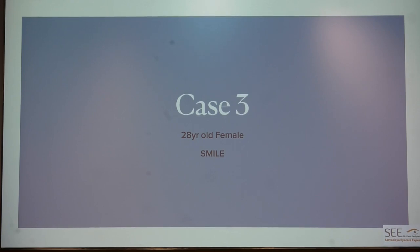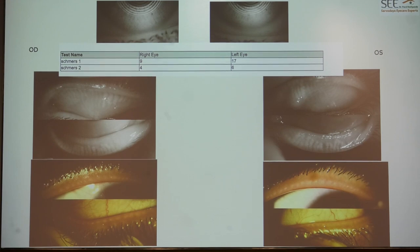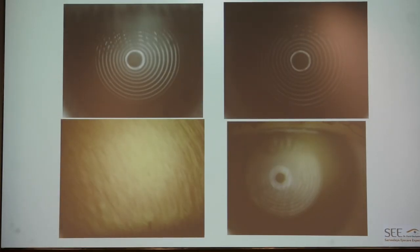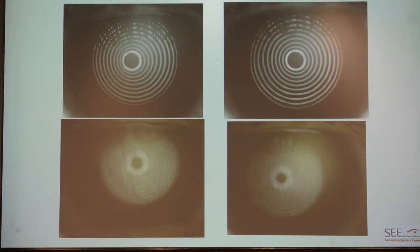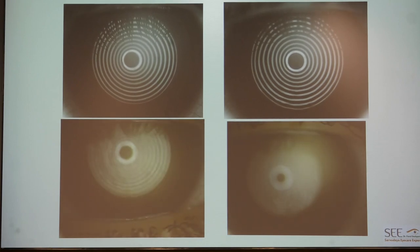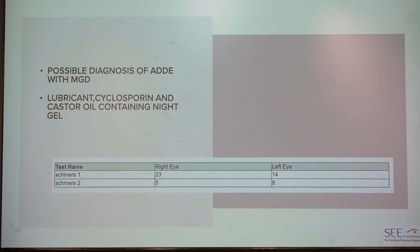Case 3: a patient who had undergone SMILE six months back with persistent discomfort on computer use. Tear evaluation showed low Schirmer's 2 values and significant meibomian gland atrophy on meibography with pouting of gland openings and viscous lipids. NIBUT was relatively okay, left eye slightly decreased. Tear film lipids showed a continuous grey film suggesting normal or slightly low lipid layer. The patient was diagnosed with a combination of aqueous-deficient dry eye and MGD — a refractive surgery-induced dry eye with a neurotrophic component — and was put on lubricants, oil-containing ointments, warm compresses, and lid massage. At six months, Schirmer's 2 improved to 5 and 8 mm.